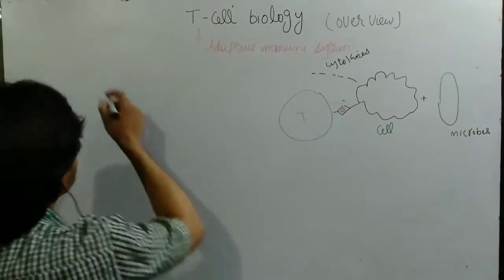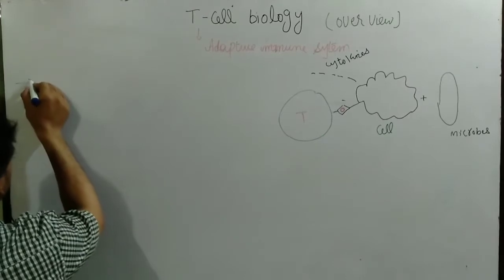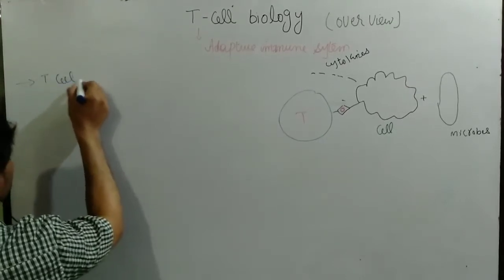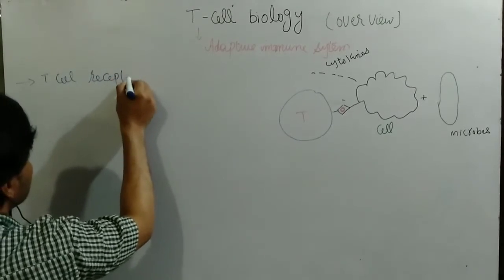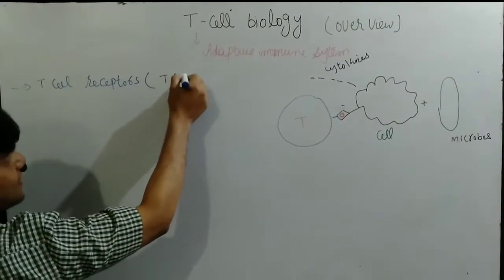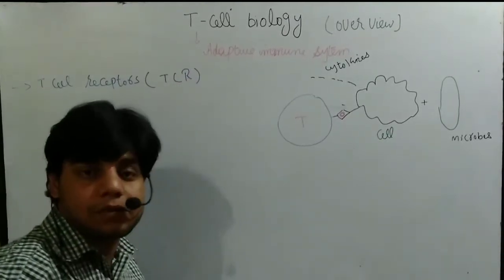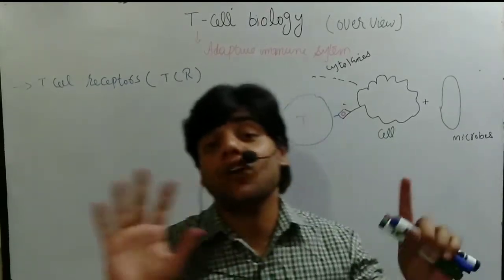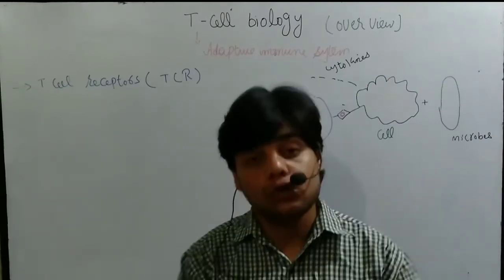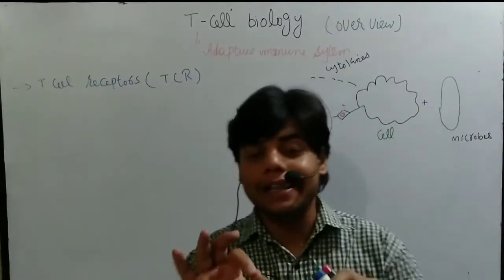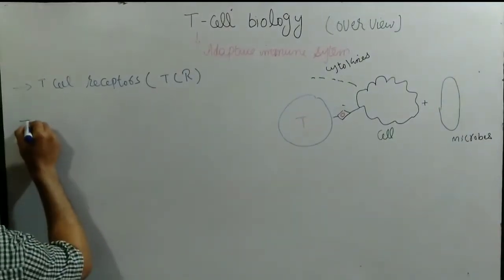In T cell biology, we are going to talk about the T cell receptor, or TCR. Remember there are different types of T cells, and each type has a different T cell receptor. We will talk about T cell receptors and their important role in the immune system in the next video.